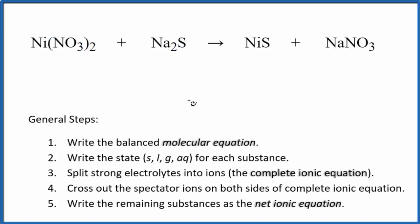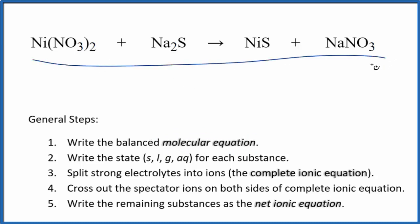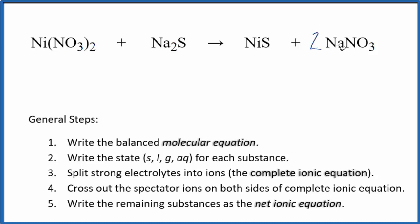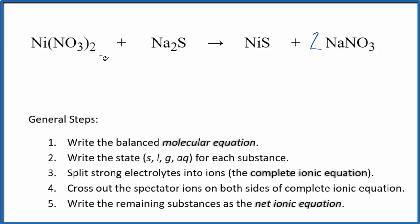The first thing we need to do when we balance net ionic equations is balance the molecular equation. This is the molecular equation. If we put a 2 in front of the sodium nitrate, we'll have two sodiums on each side, and two nitrate ions on each side. Everything else is balanced, so this is the balanced molecular equation.